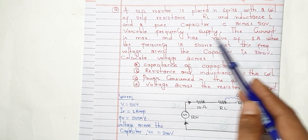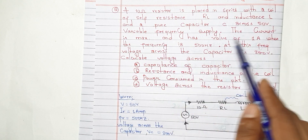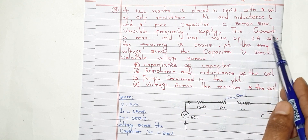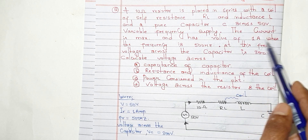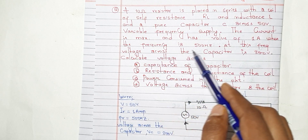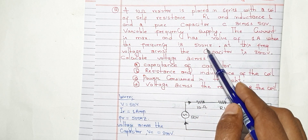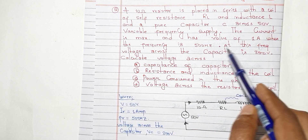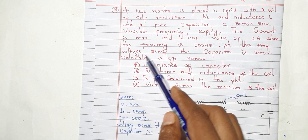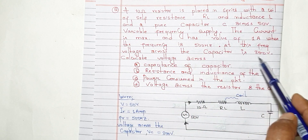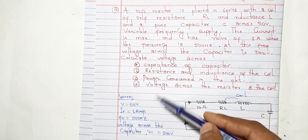The current is maximum and has a value of 1 ampere. When the frequency is 500 hertz, at this frequency the voltage across the capacitor is 300 volts.